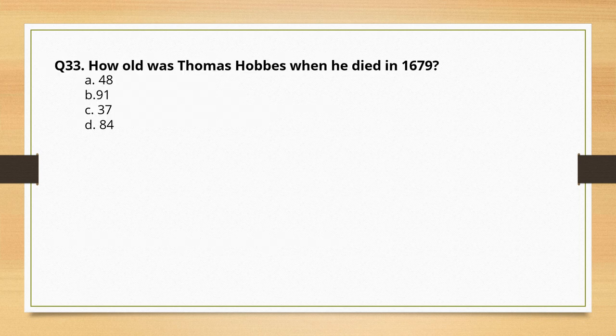How old was Thomas Hobbes when he died in 1679? Options are given. The correct option is option B: 91.